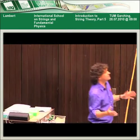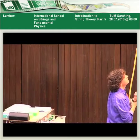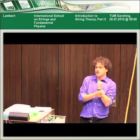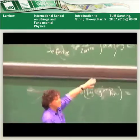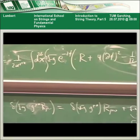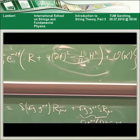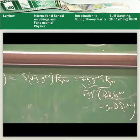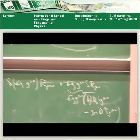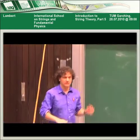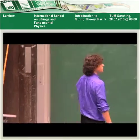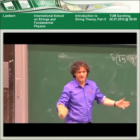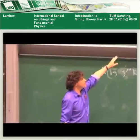That is the end of the bosonic string. I've tried to do the basics and outline how it extends to the full theory. But it's silly to go on because we need superstrings — there's a tachyon, there are no fermions, it's not much good. Tomorrow morning we'll do a very quick treatment of superstrings: we'll add fermions onto the worldsheet and deal with the consequences.